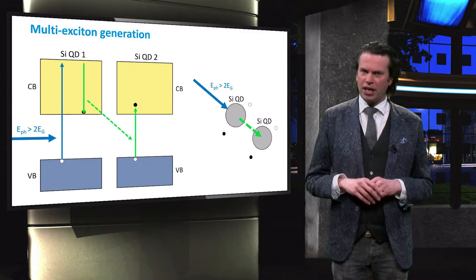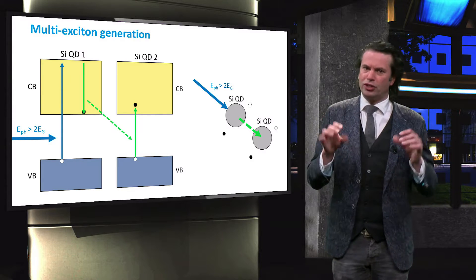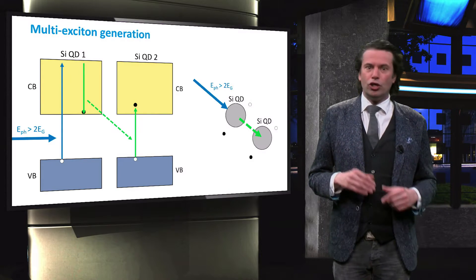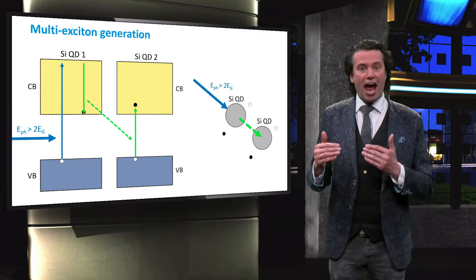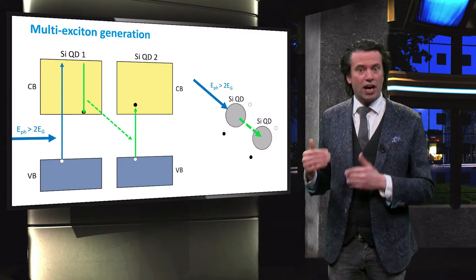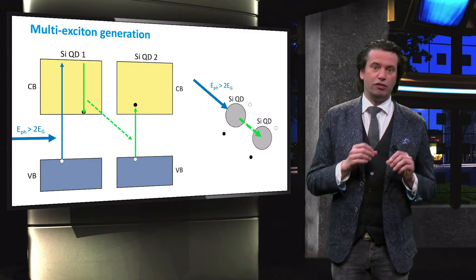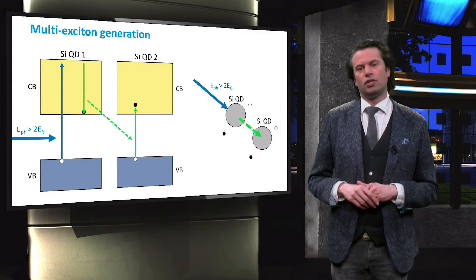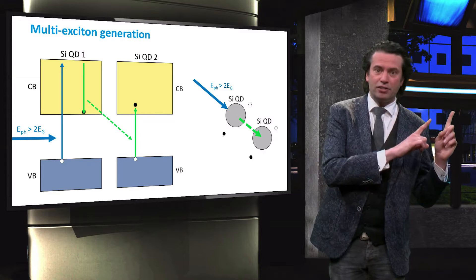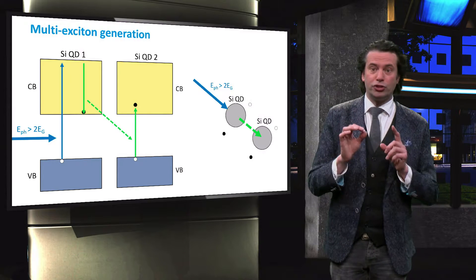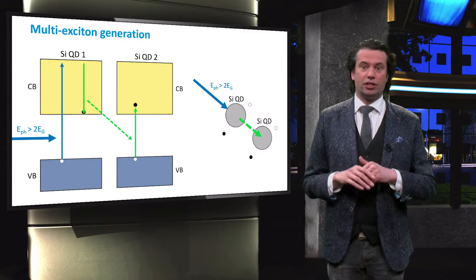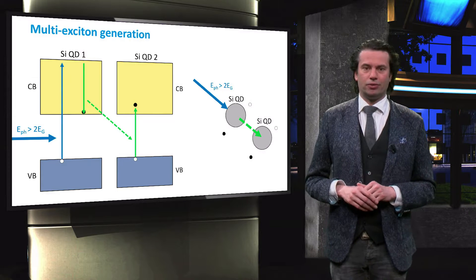Therefore, in contrast to spectral downconversion, two or more excitons are generated, rather than two lower energy photons. Consequently, one incident photon results in more than one generated electron.